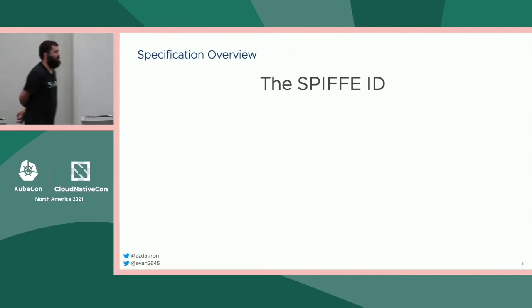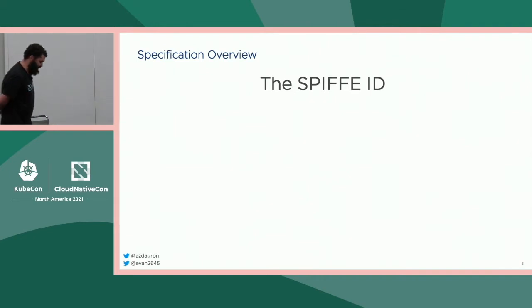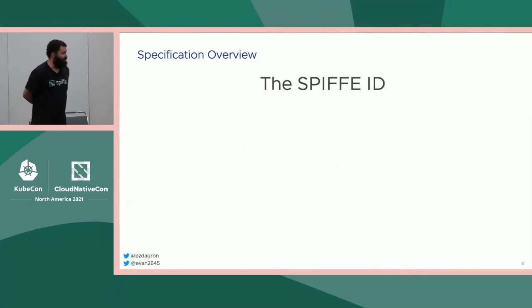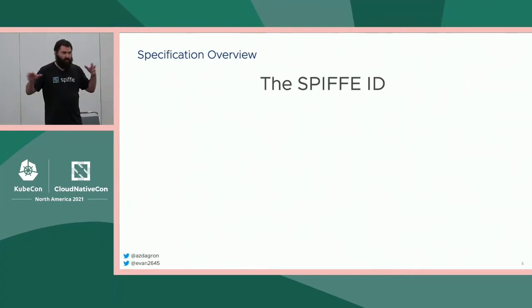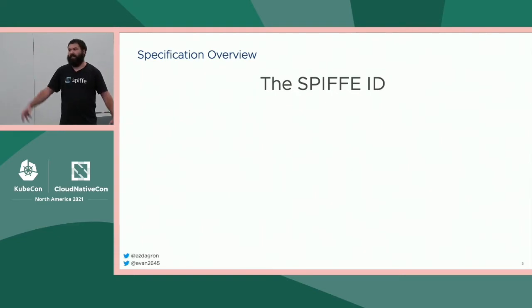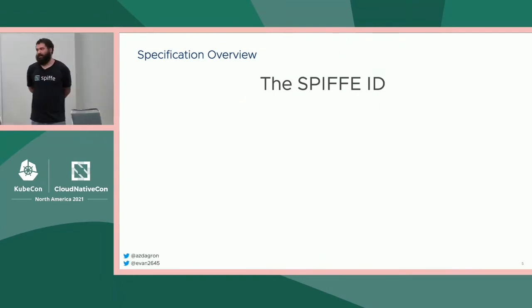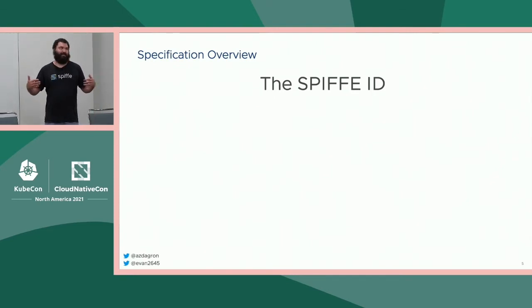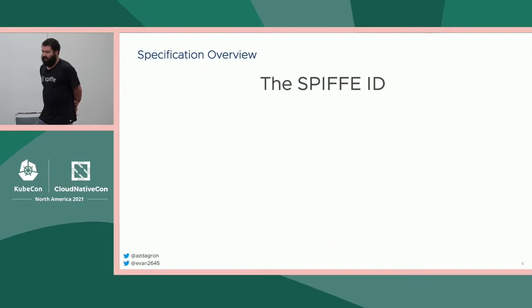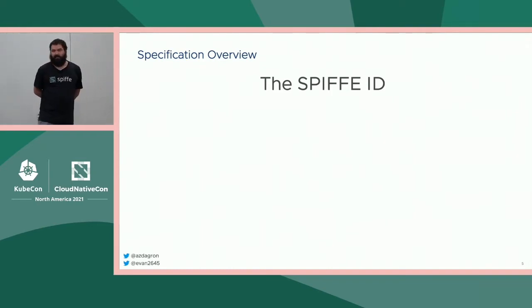This is the spec overview. We'll run through a few of the really important ones to orient everyone on how they fit together, then choose a few for a deep dive. The first spec is the SPIFFE ID spec — the most basic one. It dictates the ID itself, the rules around it, how it's formed. It gives the name — it's like a username for workloads.